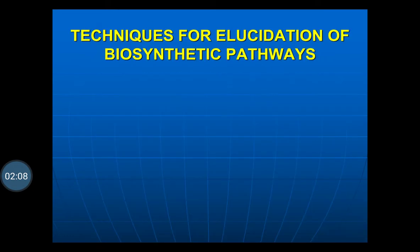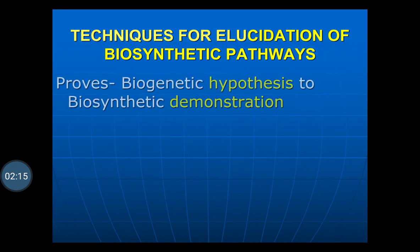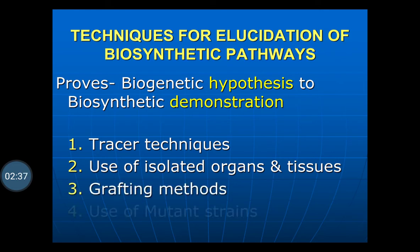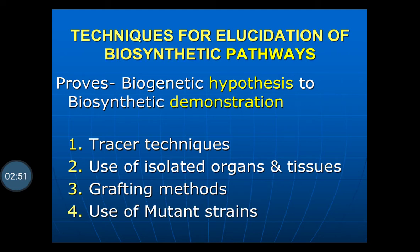We will start with the techniques for the elucidation of the biosynthetic pathways, which prove the biogenetic hypothesis to biosynthetic demonstration. In this case, the tracer technique, use of isolated organs and tissues, grafting methods, and use of mutant strains are used. The tracer technique is the main technique, in which radioactive isotopes are used for the elucidation of the biosynthetic pathway.